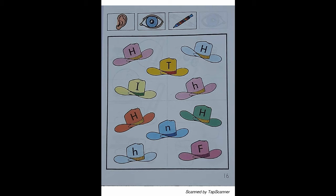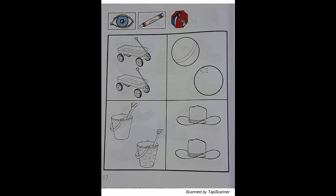Best of all. With your eyes, find the hats that are big H or little H. With your black marker, circle the hats that have a big H or a little H on them. Page 17.